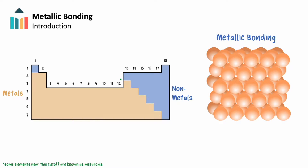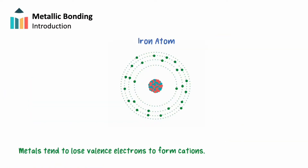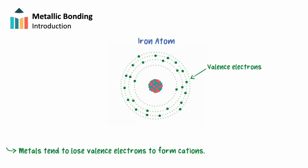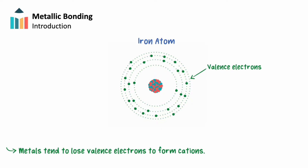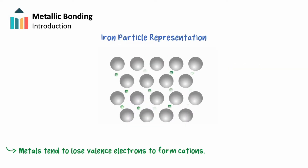Metals lie on the left side of the periodic table. Similar to ionic bonding, bonds that form between metals form a lattice structure. Metals have a small number of valence electrons and therefore will tend to lose these electrons to form cations. When no other element is present to receive the transfer of electrons to form an ionic bond, metals form lattices of cations with their valence electrons becoming delocalized.